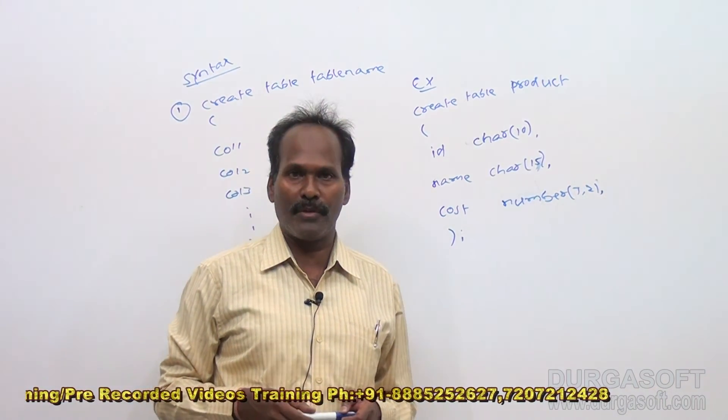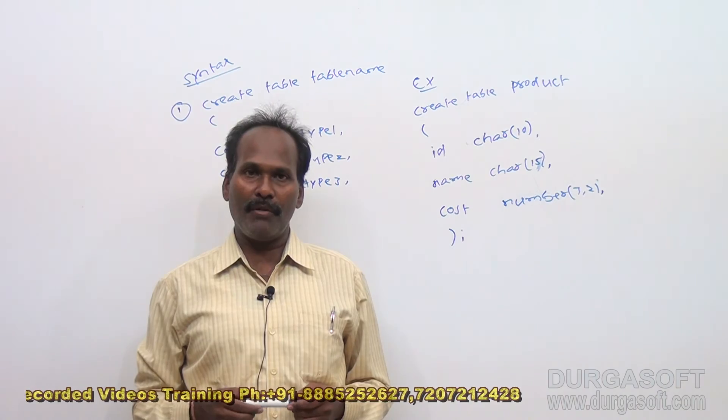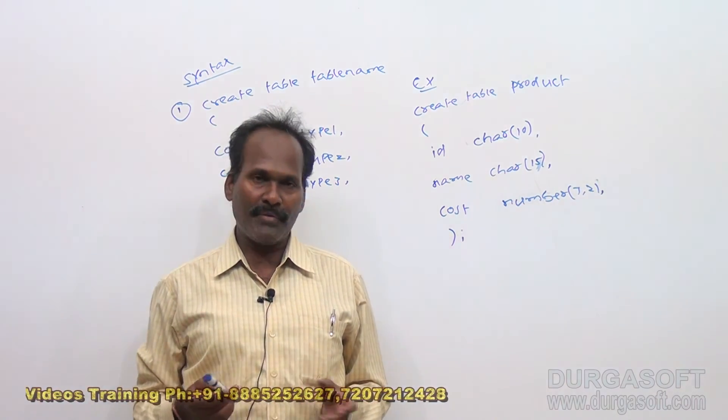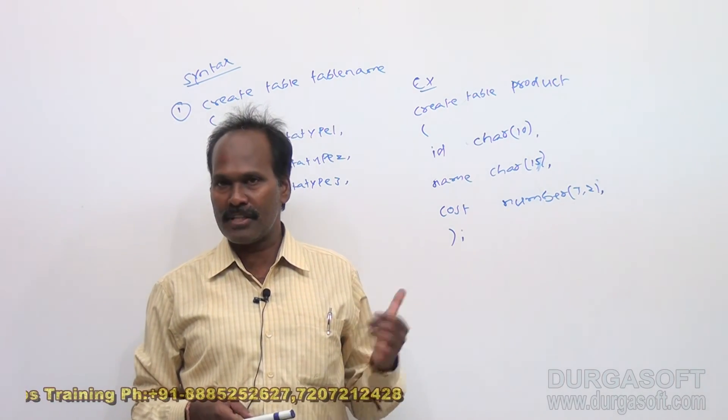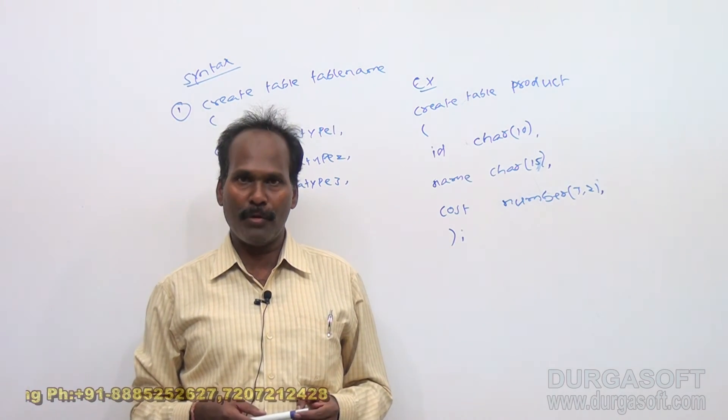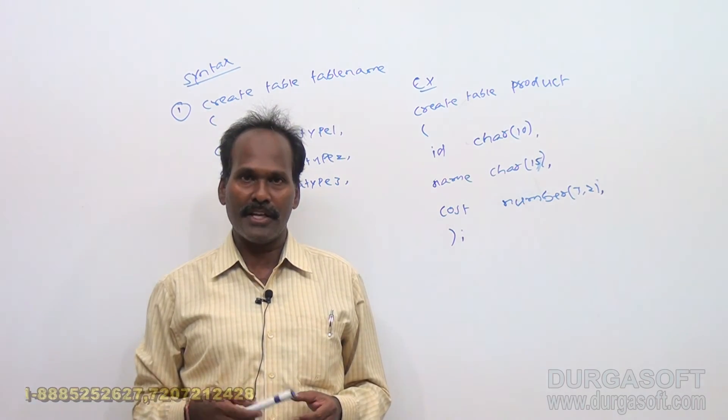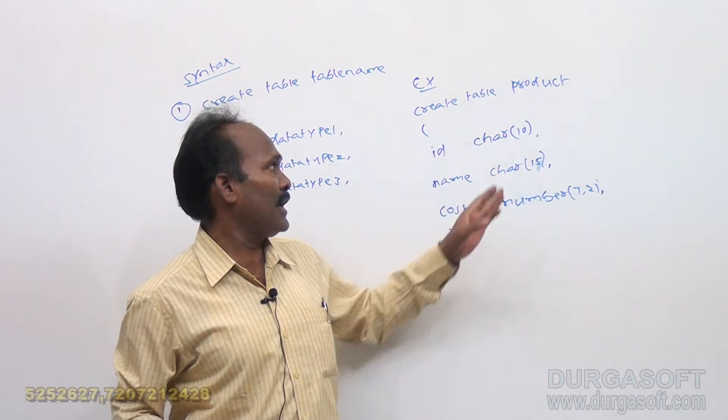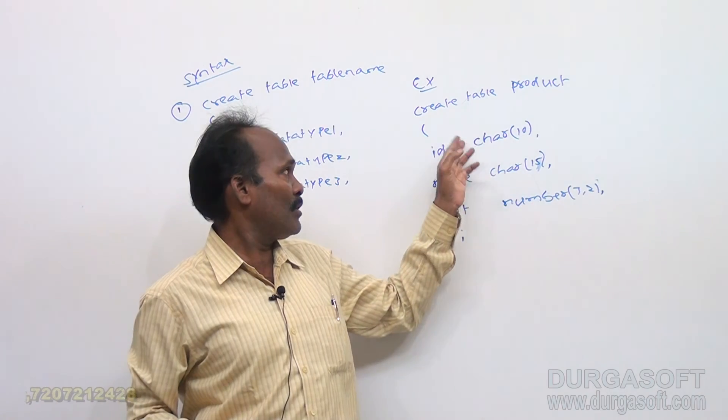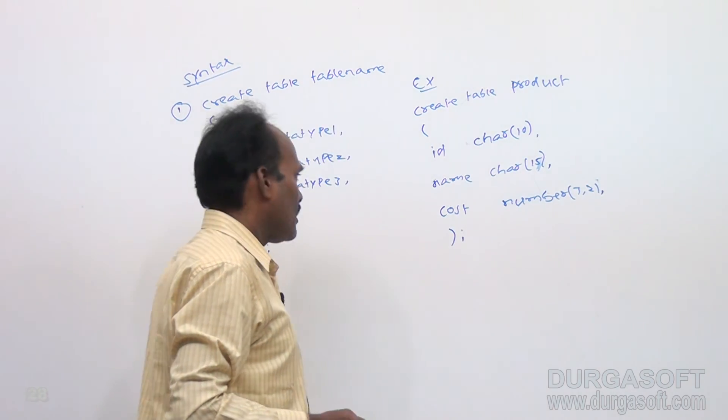What are the constraints? Some business rules can also be given at the time of creating table. Business rules you can give either at the time of create table or either at the time of alter command also. By using alter command also you can specify business rules, or at the time of create table command also you can specify one or more business rules. That means giving business rules for the table is completely optional. In this simple example, I did not give any business rules here. Just I have given column name, just I have given only column types. I did not give any business rules. Later we will see how to give the business rules.